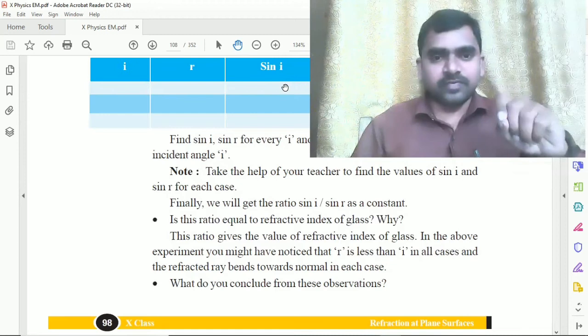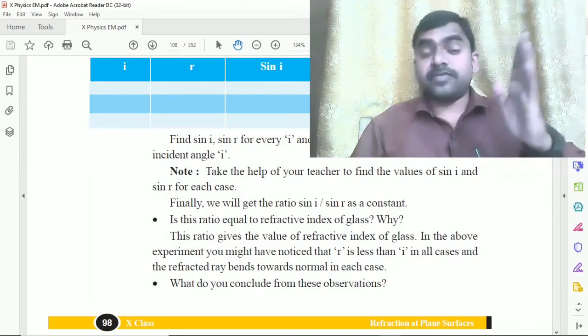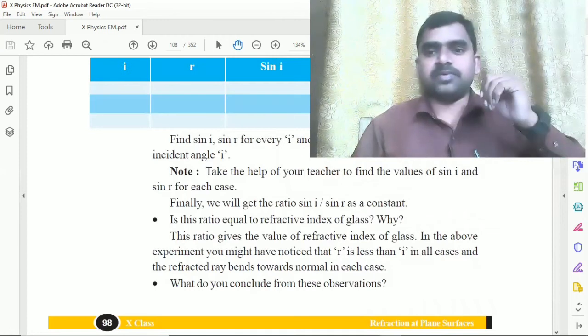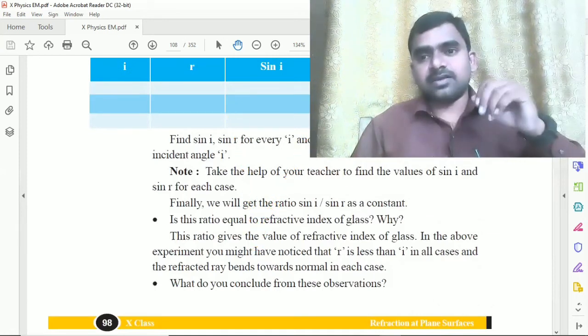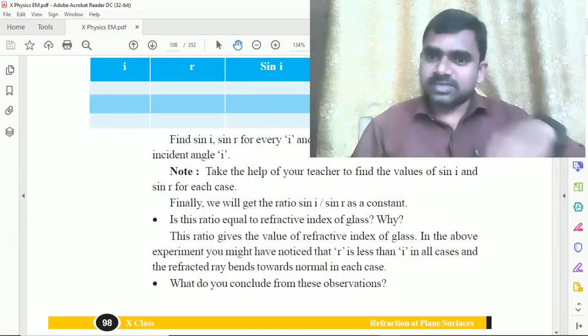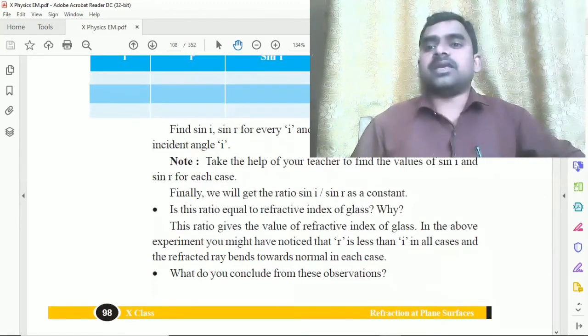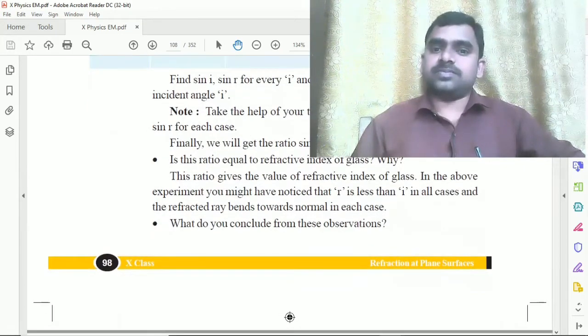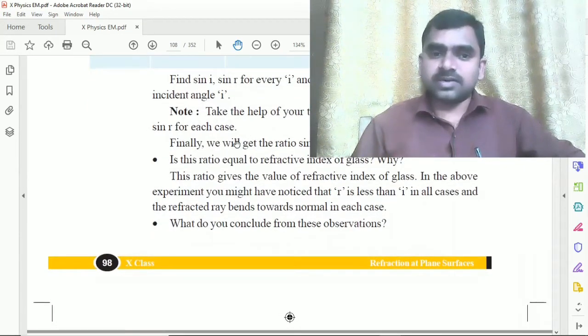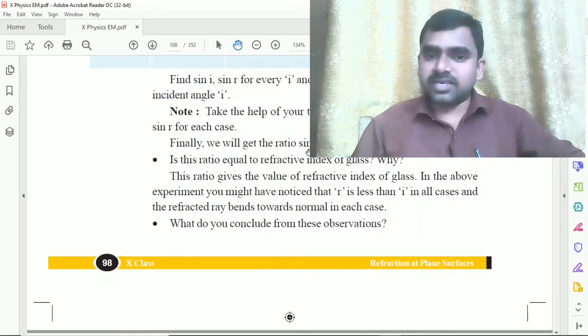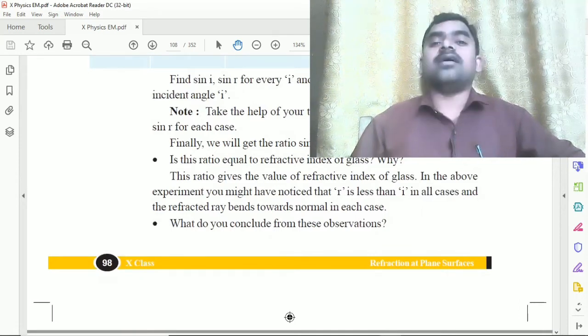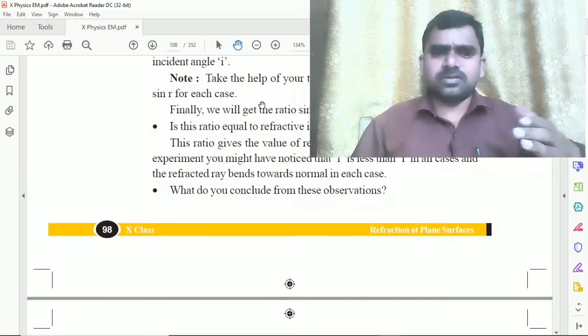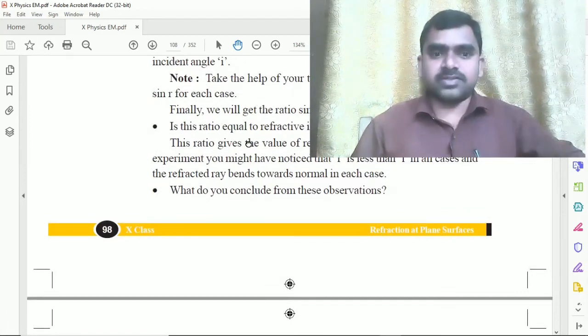Sine i is sine 15 degrees. Sine r, definitely less than 15 degrees. In the table, calculate sine i and sine r for each angle. What we are going to see is that finally we will get the ratio: sine i by sine r is constant. It's almost the same value.